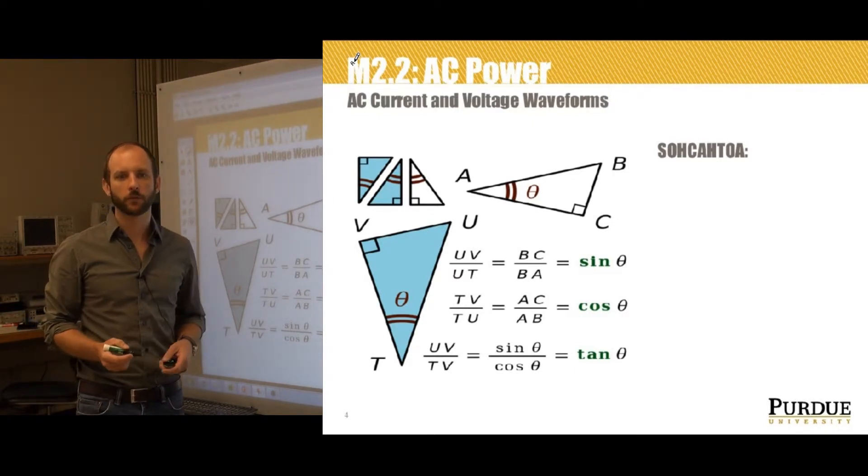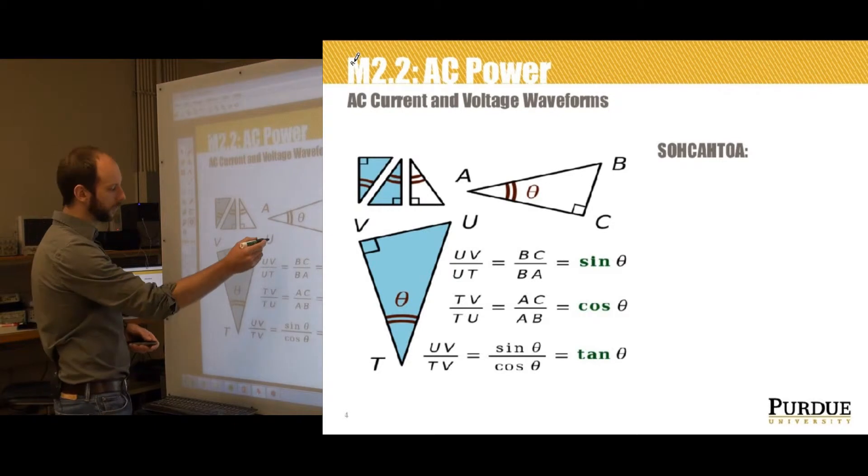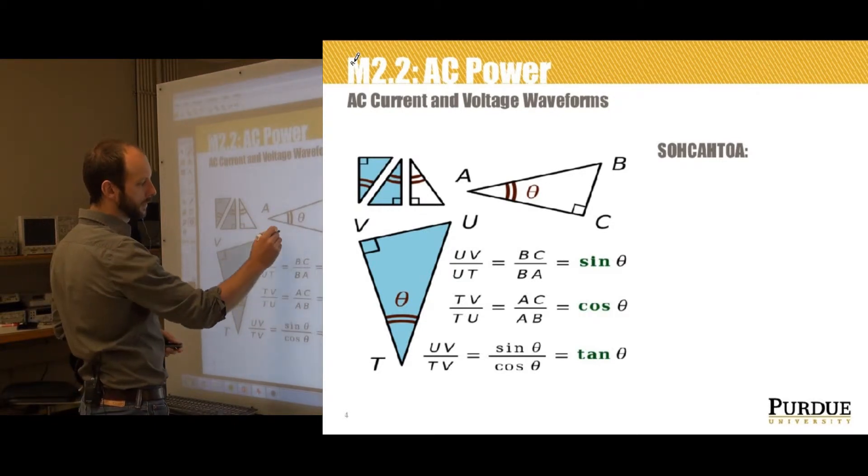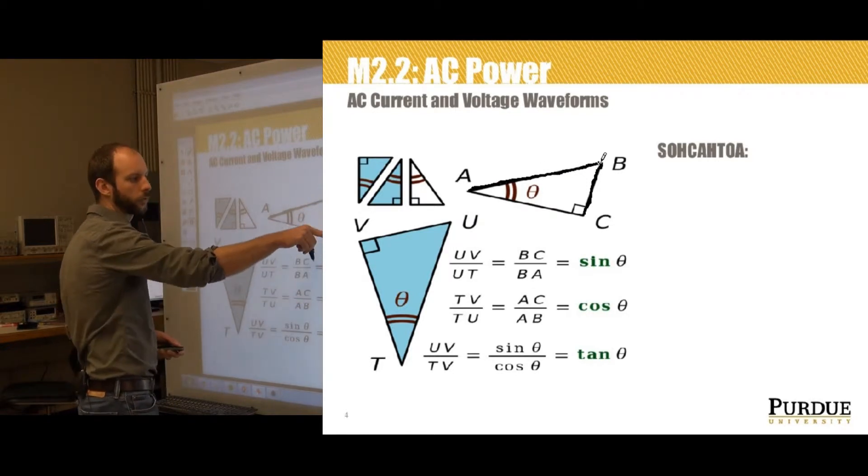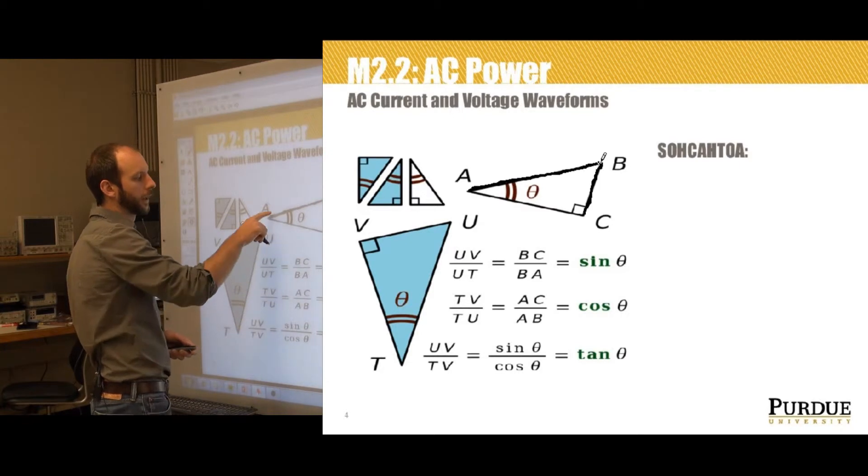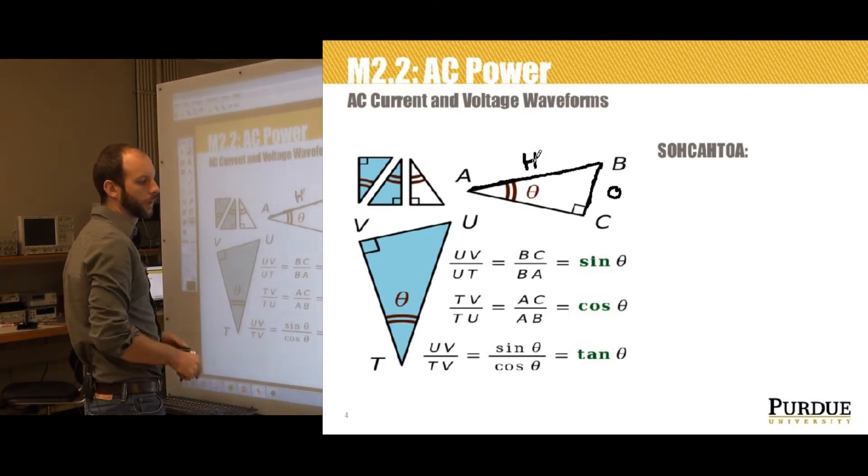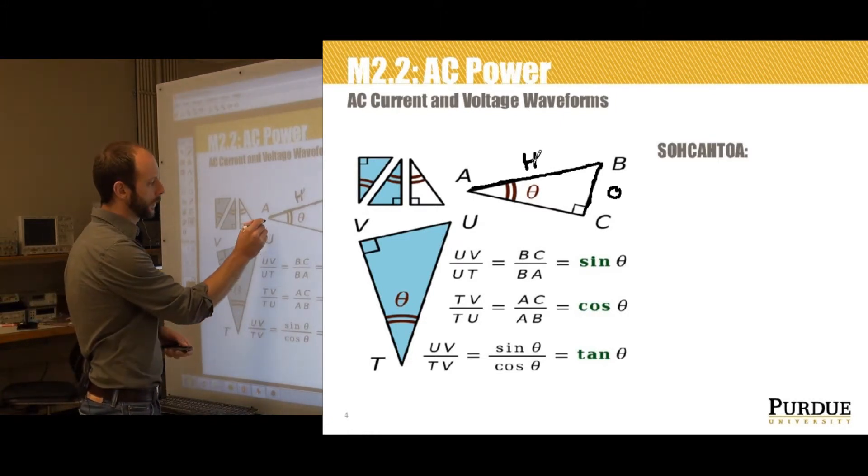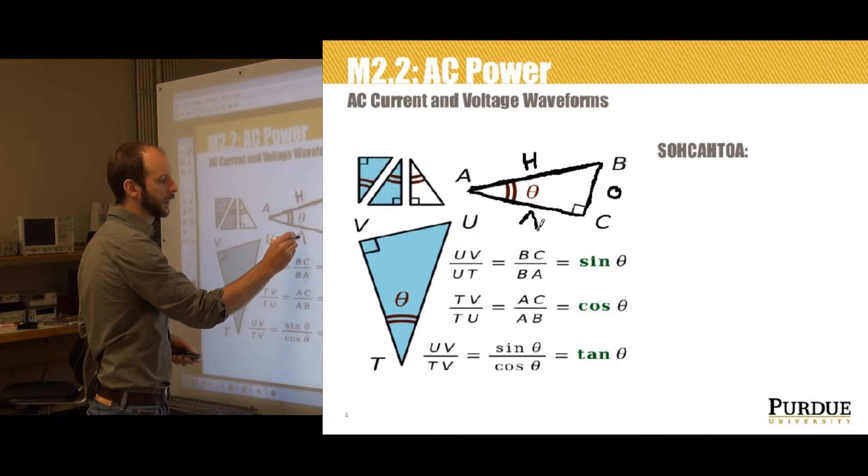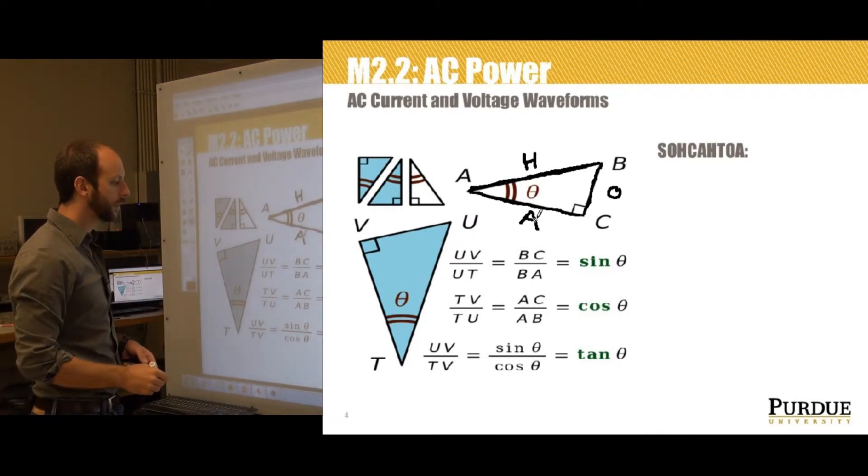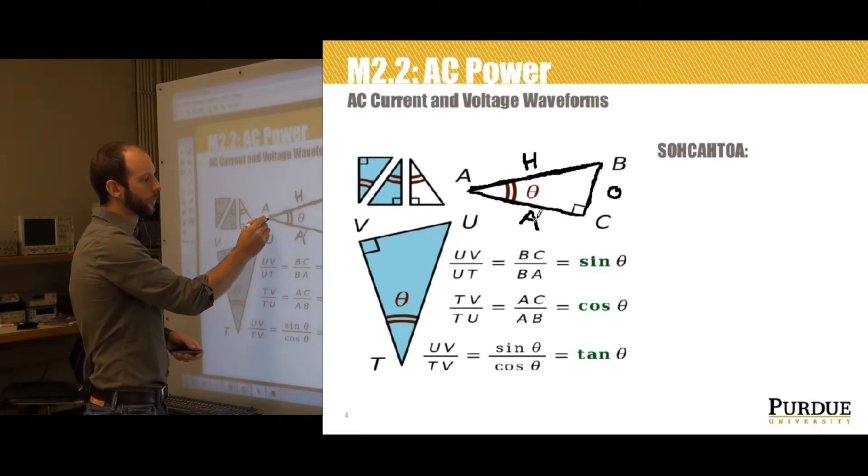The sine of an angle is the ratio of the length of the opposite side to the length of the hypotenuse. So if we've got our right triangle, the sine is the length of BC to BA. We casually refer to BC as the opposite side and AB as the hypotenuse. The cosine of an angle is the relationship between AC and AB, so cosine is the adjacent side over the hypotenuse. And finally, we have the tangent function, which is opposite over adjacent, or BC over AC.